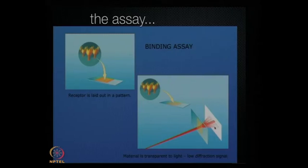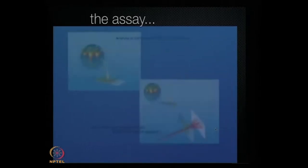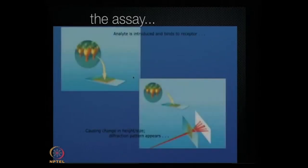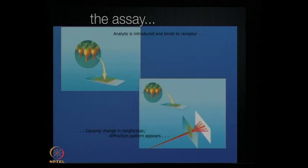However, if binding were to take place, so that this molecule now has a complementary partner binding to it — imagine the yellow one is protein one and the green one is protein two — what you see is that the grating becomes more pronounced. So when light shines through that grating, you're going to get a much brighter spot.